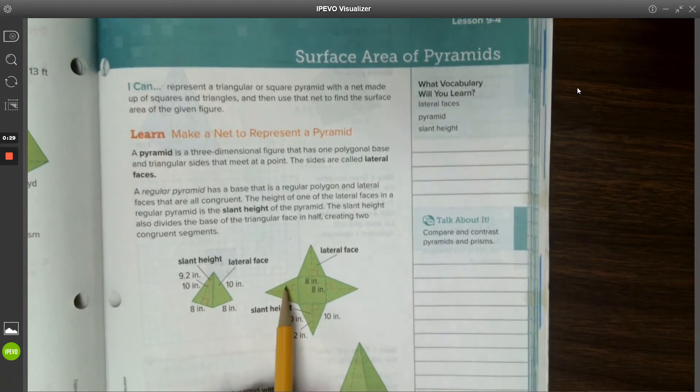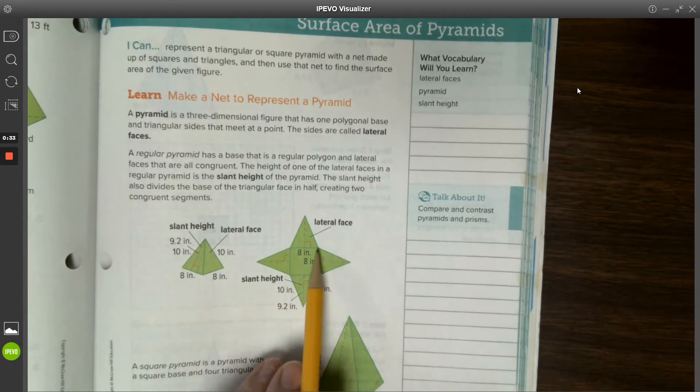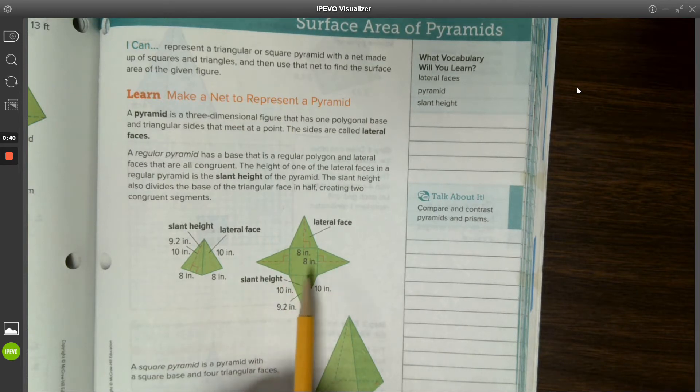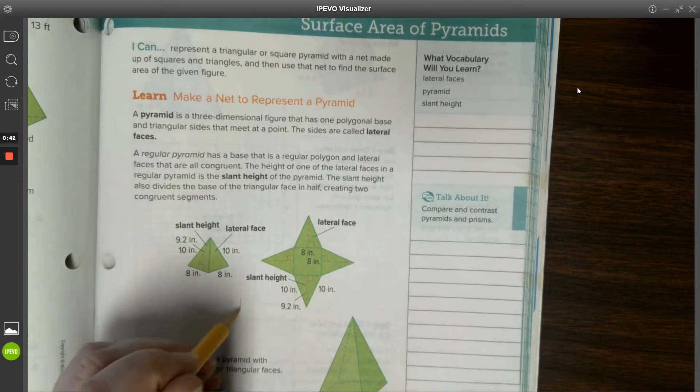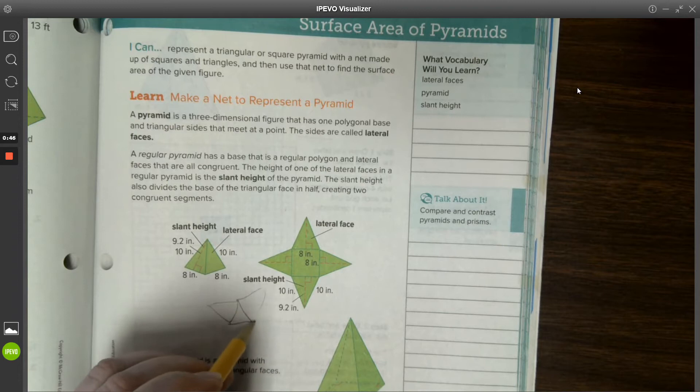Whatever is in the center of the net here is the type of pyramid that it might be. So this is a square base pyramid. We can also have triangular base pyramids and they only have three faces to them.